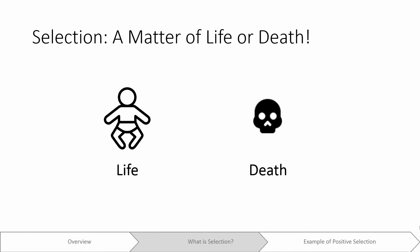One way we can accomplish this is through a process known as selection. Selection is a process where we can determine if our cells have taken up DNA based on whether or not our cells live or die. It is literally a matter of life or death.